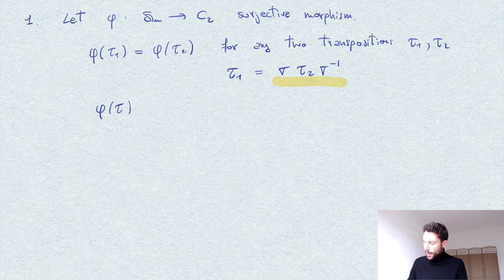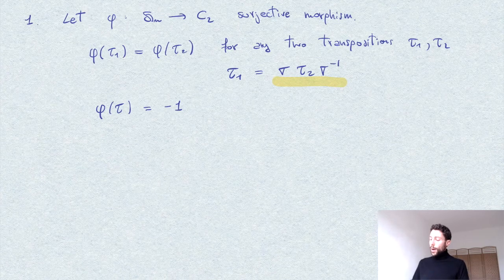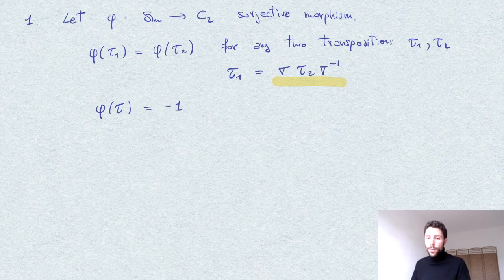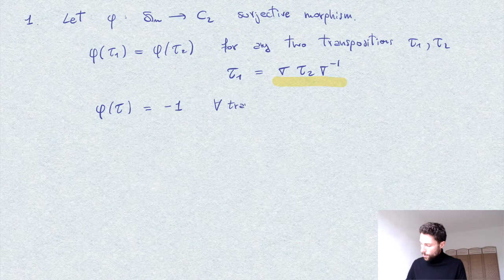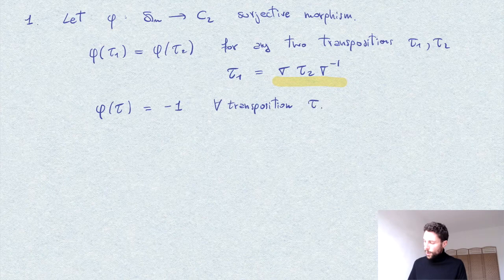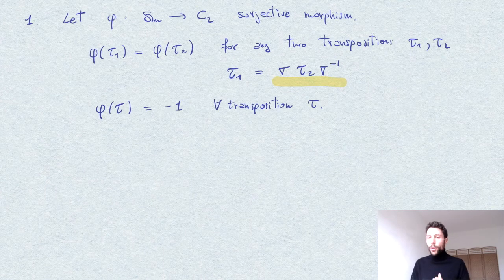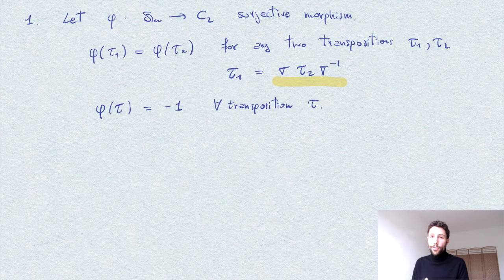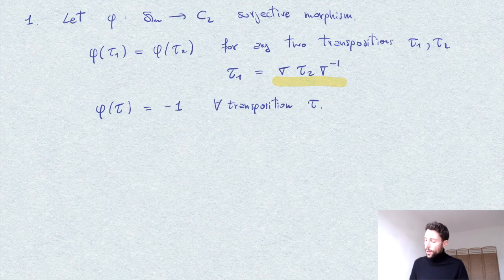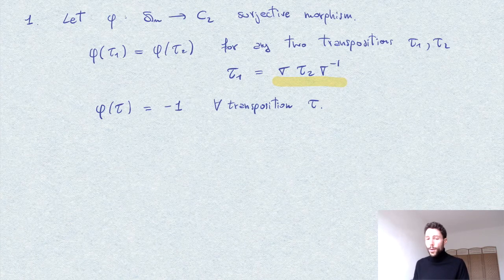So all transpositions have the same image under phi, and of course we also deduce that phi of any transposition has to be minus 1, since otherwise the morphism will not be surjective.